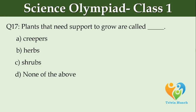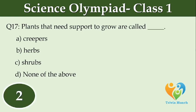Plants that need support to grow are called dash. Option A: Creepers. Option B: Herbs. Option C: Shrubs. Option D: None of the above.